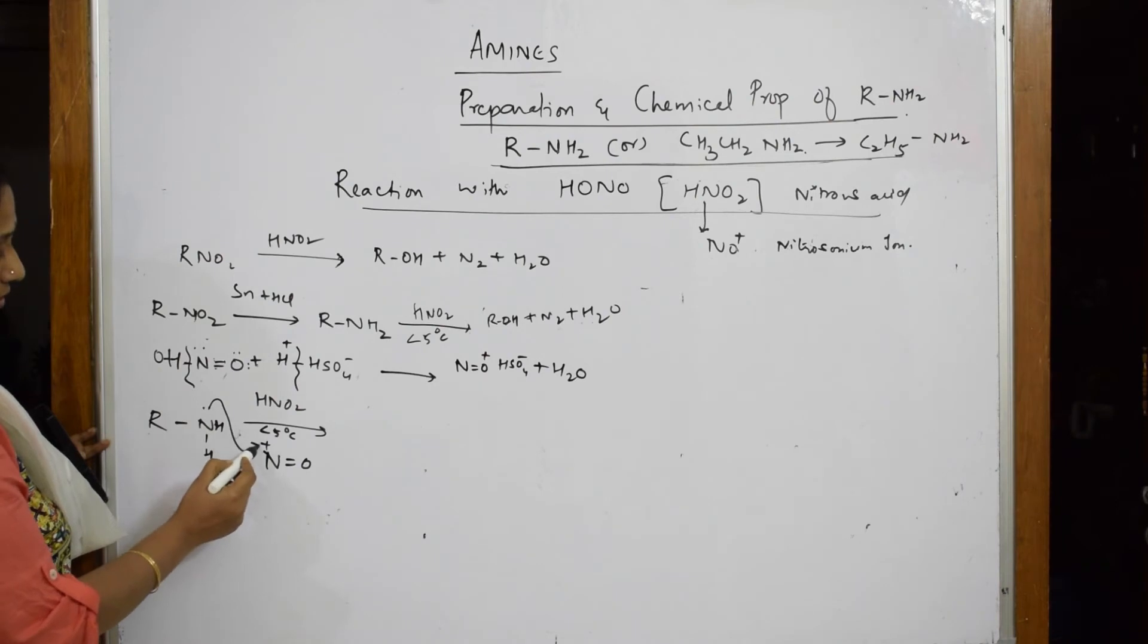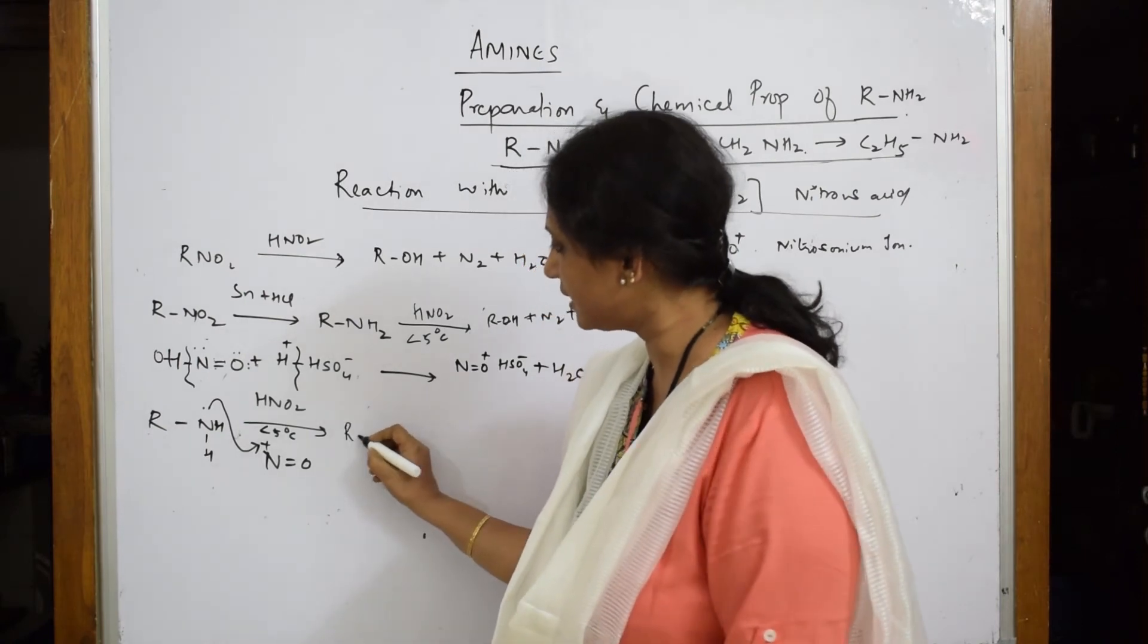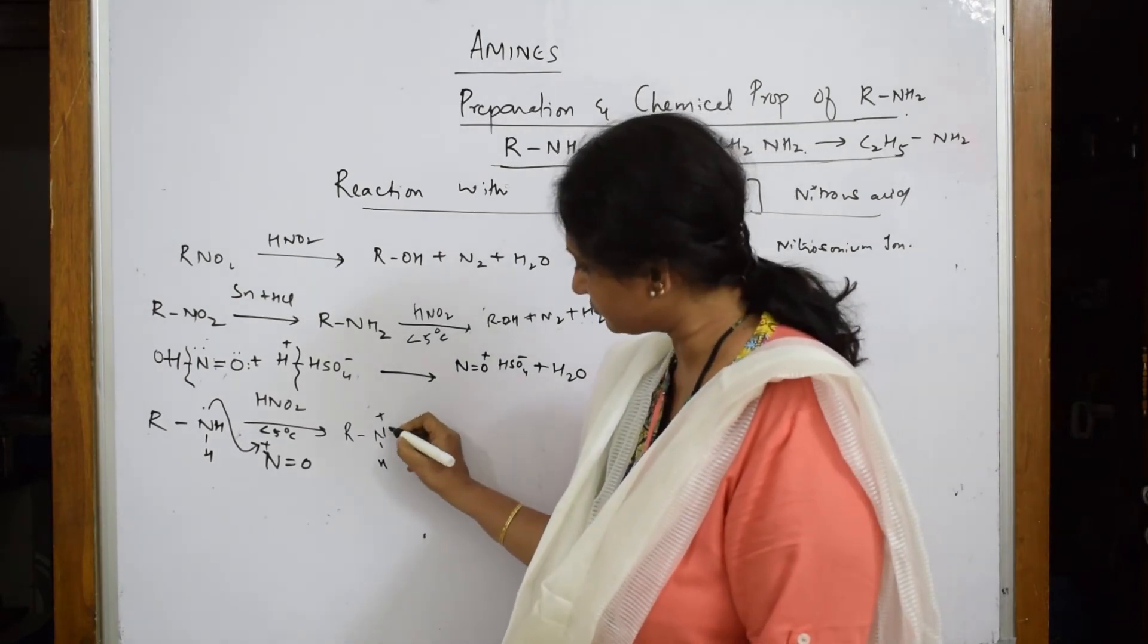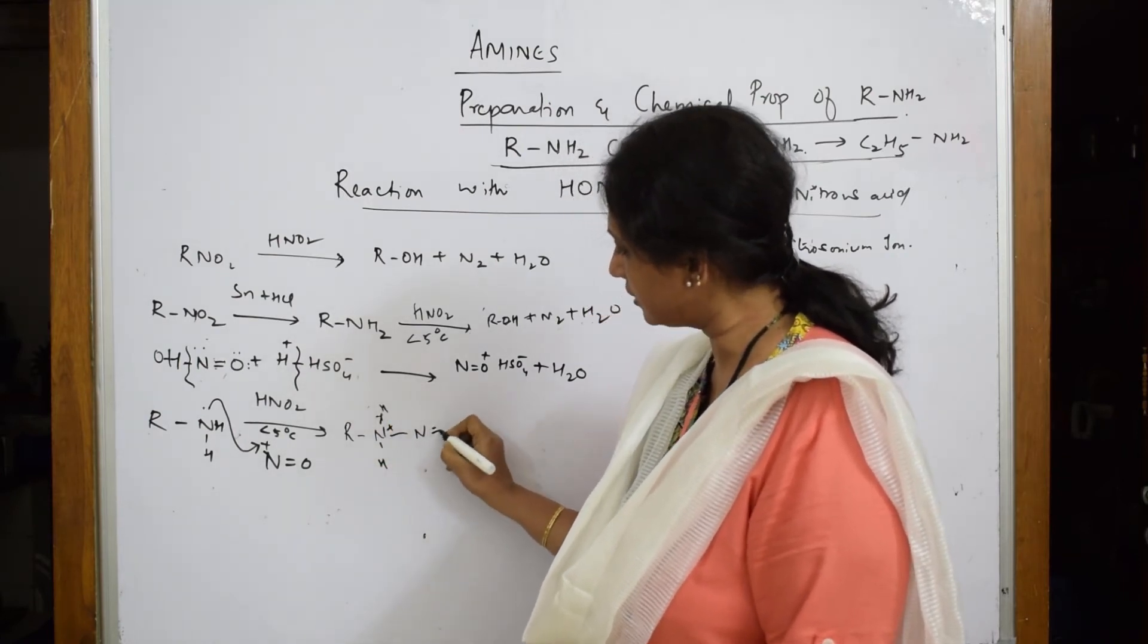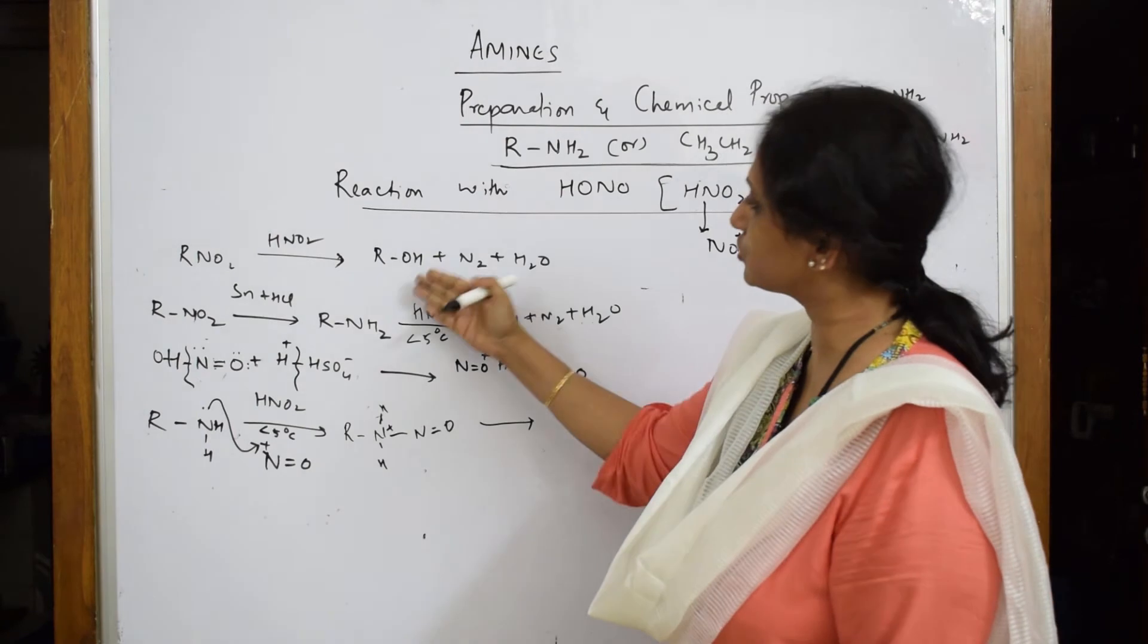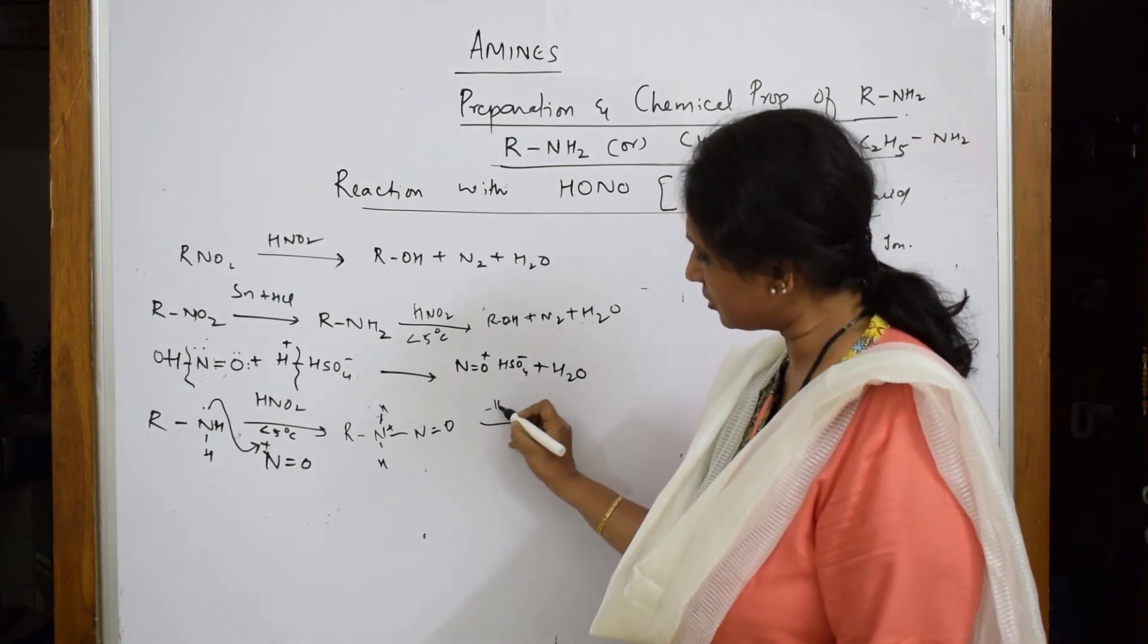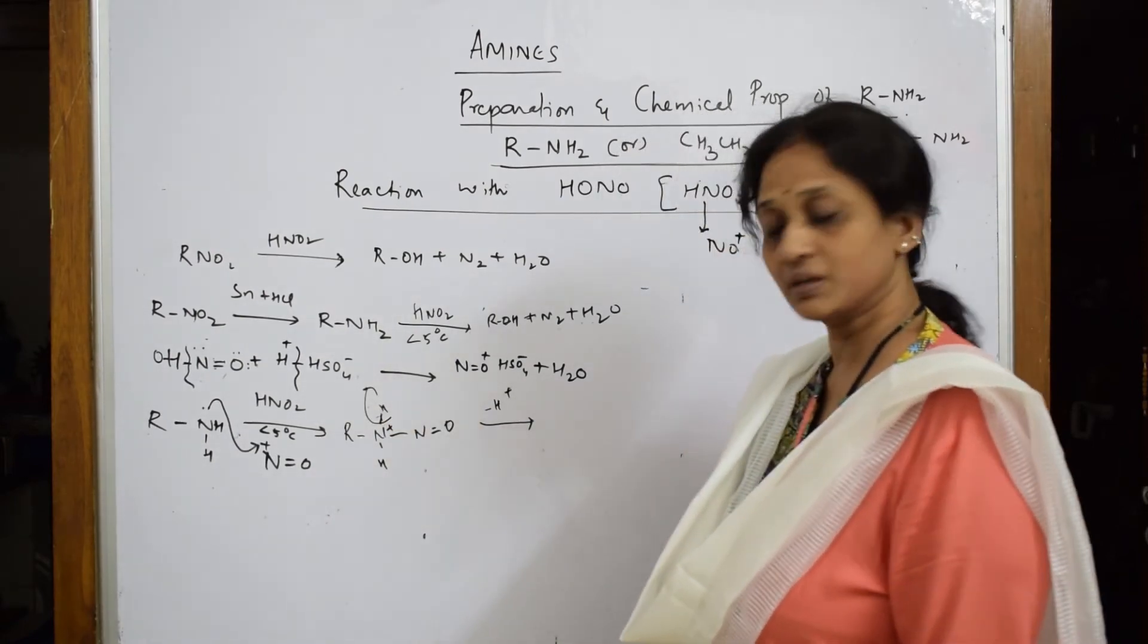This lone pair of electrons is donated to this nitrosonium cation. When it is donating, what do I get? I get R-N+ because this has lost an electron. This becomes plus, with H here, and it's going to form a bond with N=O. Observe carefully what I'm trying to show - the formation of these products. For this particular complex, let us take out hydrogen. H+ from where? From here.